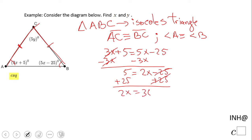So we found x. Now we need to find y. Let's go back and find one of the angles. 5x - 25 becomes 5 times 15 minus 25, that would be 75 minus 25, which equals 50.